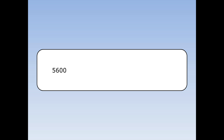What's five thousand and six hundred in standard form? First I need a number between one and ten. So I can't choose fifty-six, because that's too big. So I need to choose five point six times a thousand. That's equal to five point six times ten cubed. Five point six is between one and ten, times ten to the something — this is standard form.